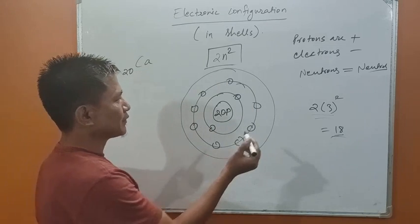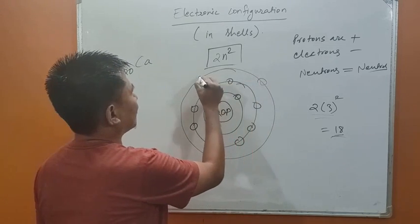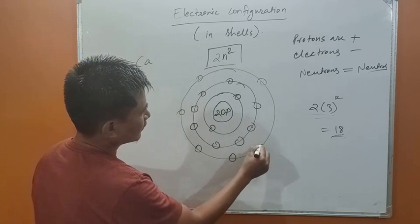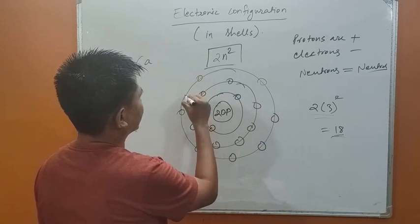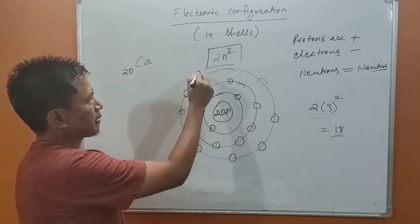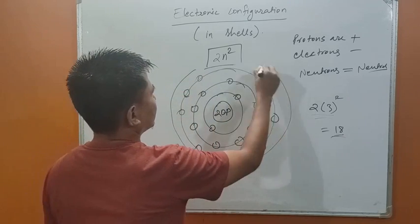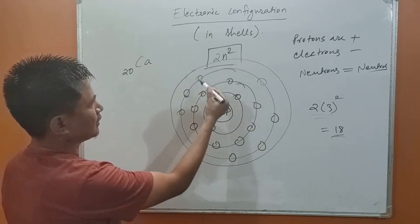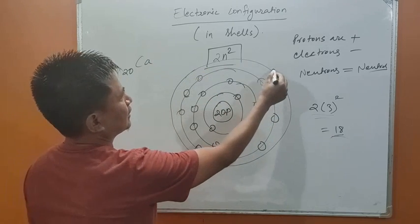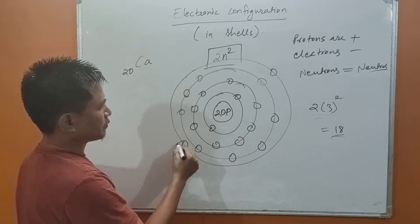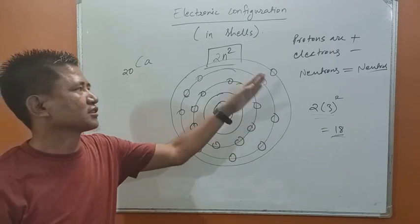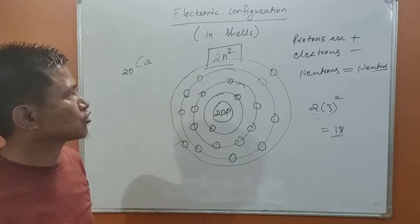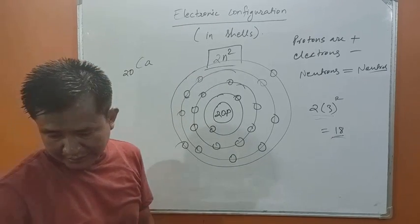So in the outermost orbit we place 8 electrons, leaving 2 electrons for the next shell. That gives us 2 plus 8 plus 8 plus 2 equals 20. This is the atomic structure of the calcium atom.